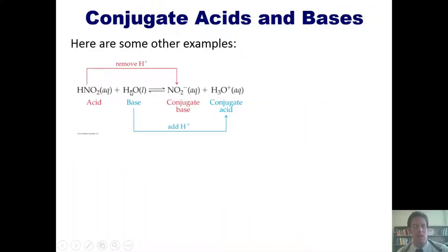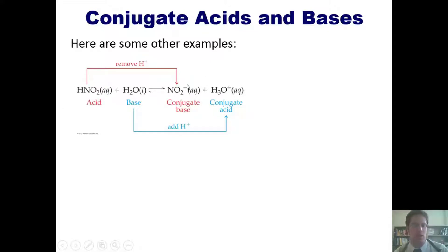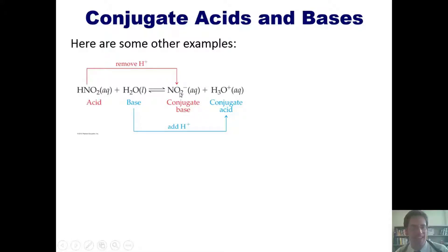In this example, we have nitrous acid reacting with water. We look at the left-hand side and identify the acid and the base. The acid is the thing that gives up a hydrogen as it moves to the product side — that's definitely the nitrous acid. Nitrous acid gives up a hydrogen and transfers it to water to become NO2-. The thing that gives up the hydrogen is the acid; the thing that accepts it is the base. The water, after accepting the hydrogen, turns into hydronium H3O+, which is that water's conjugate acid.